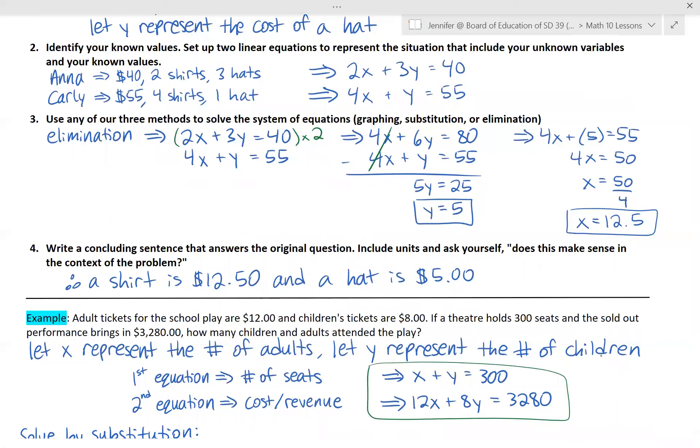Well we know that adult tickets are $12 and children's tickets are $8. We know the total number of seats and the total amount of money made. So I think it makes sense for the first equation to be representing how many seats there were and the second equation to be associated with the cost or the revenue. So to write an equation for the number of seats is actually quite straightforward. We know that there's 300 seats and X and Y represent how many adults and children there were. So that equation is just X plus Y equals 300. The number of adults that went to the show and the number of children that went to the show, that has to add up to be 300 because it was a sold out performance.